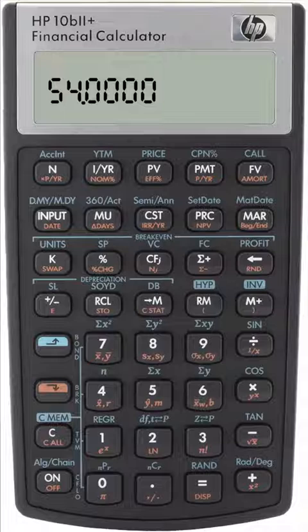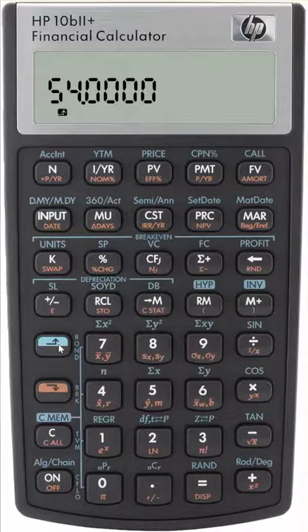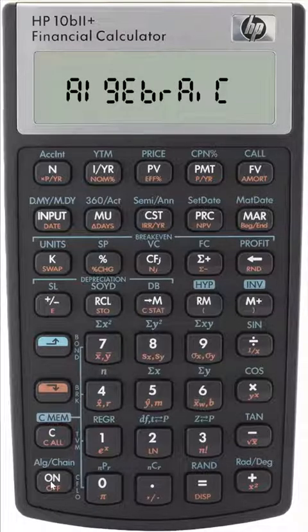And calculated intermediate results at each step. So it took 4 plus 5, which equals 9, and then multiplied that by 6 for a result of 54. That is because we were in chain mode.